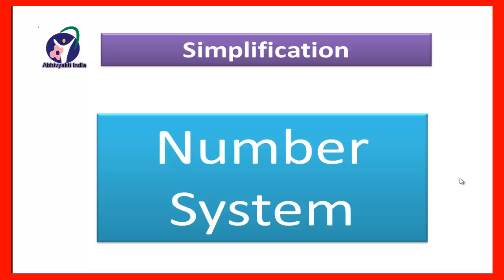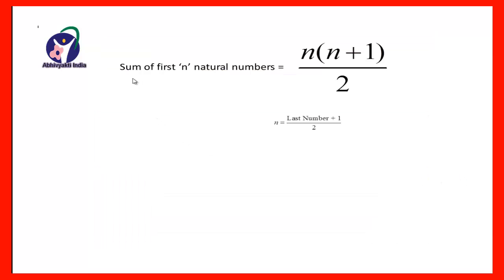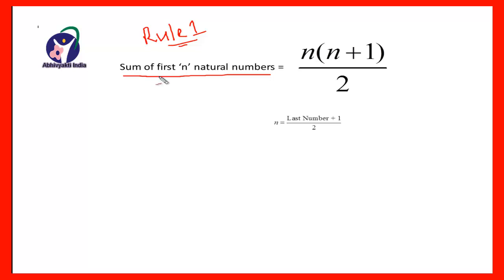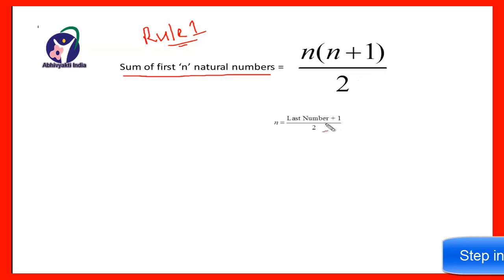Here are the rules. The first rule is that the sum of the first n natural numbers is given by n(n+1) divided by 2.